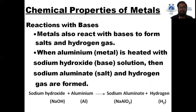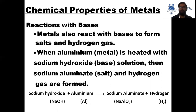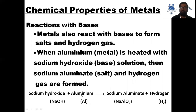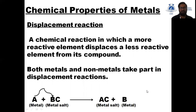When aluminium metal is heated with sodium hydroxide, which is basic in nature, it gives sodium aluminate and hydrogen gas. So when sodium hydroxide reacts with aluminium metal, it gives sodium aluminate, which is a salt, and hydrogen gas.